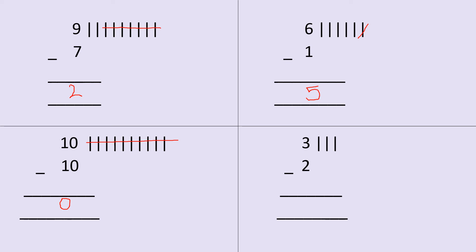Now let's come to another one. This is three minus two. So I have made three lines. Out of three lines, how many lines do I need to cut? Two lines. When I cut these two lines, how many lines am I left with? One. So my answer will be one. Got it, children?